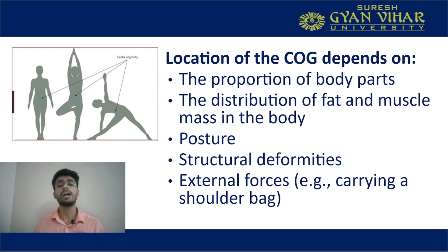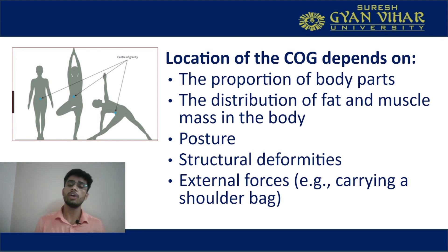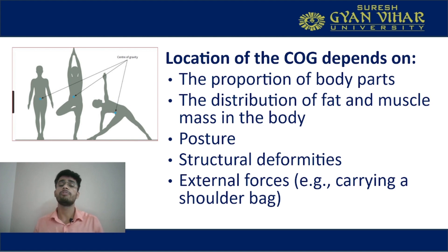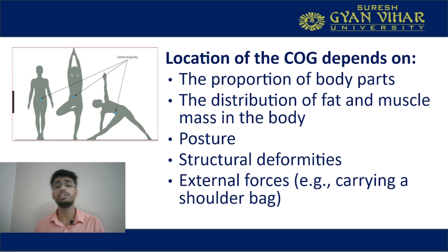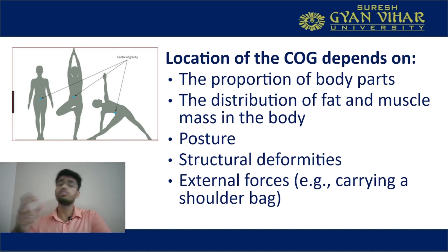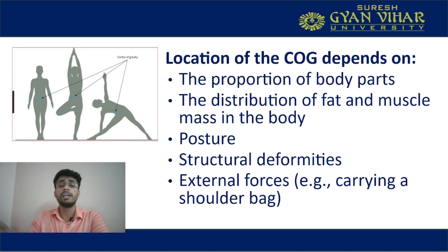Structural deformities can occur congenitally or develop from an accident or trauma. There can be a limb length discrepancy — one limb longer and the other shorter — causing the person to be slightly laterally flexed on the shorter side. This means the center of gravity will shift toward the shorter side because more body proportion is there. Structural deformities like scoliosis, kyphosis, and limb length discrepancies also alter the location of center of gravity.